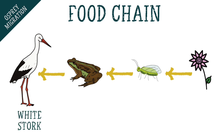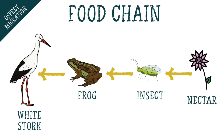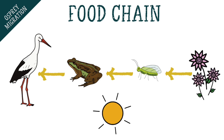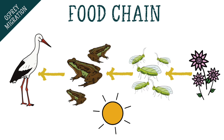For example, a white stork may feed on frogs, and the frogs depend on insects for their food, and the insects suck nectar from flowers. So in the warm months when plants spring into life they influence the rest of the food chain, often in turn making food more widely available for the predator at the top of the food chain.